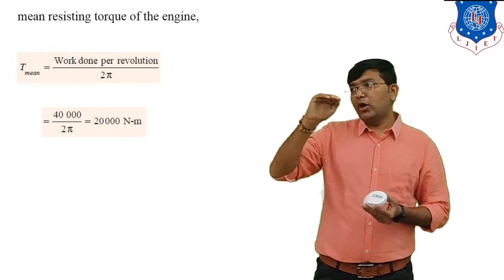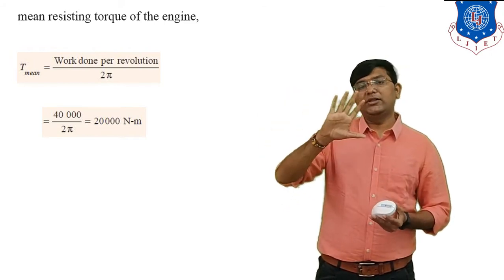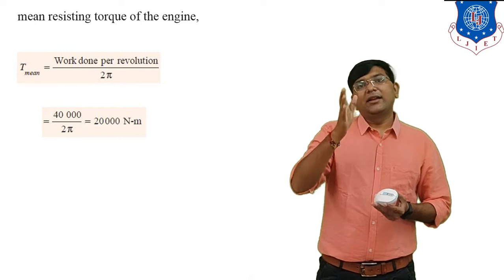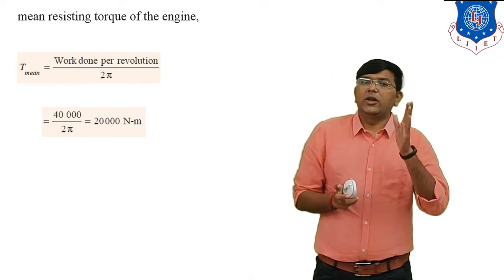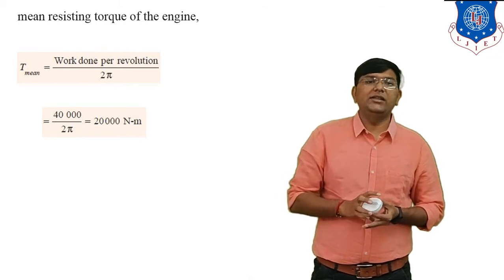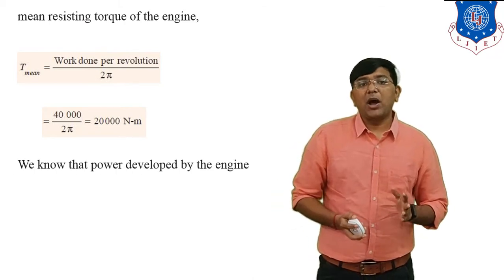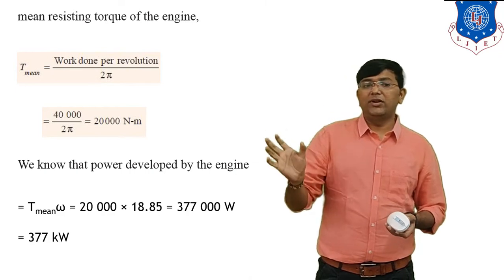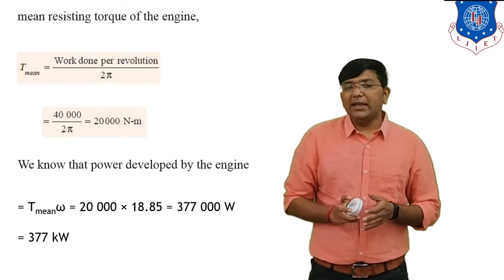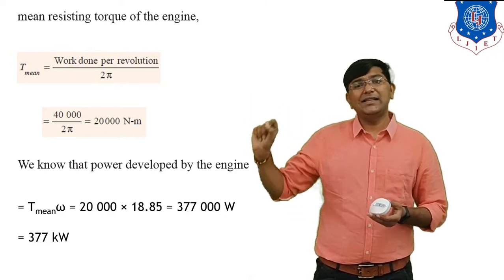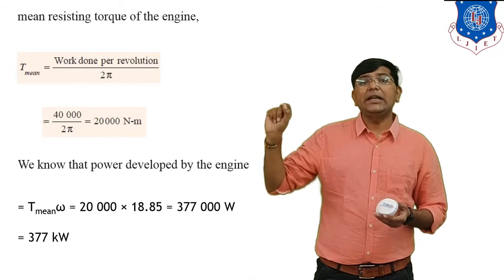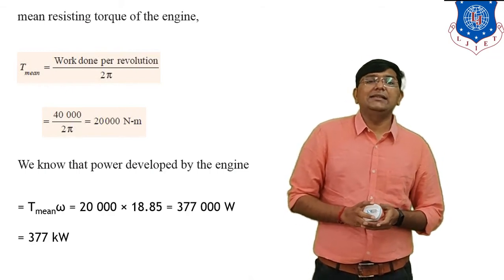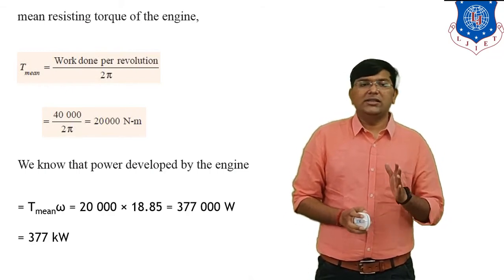The mean resisting torque indicates the horizontal line on the diagram — just as y equals 5 is a horizontal line equation, here the equation of the horizontal line is T_mean equals 20,000 N·m. Power developed by the engine: power equals 2πNT/60, which is equivalent to T times omega. Substituting values, power equals 377 kilowatts.